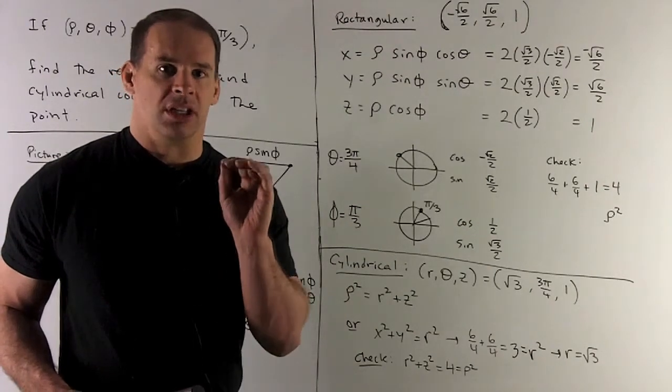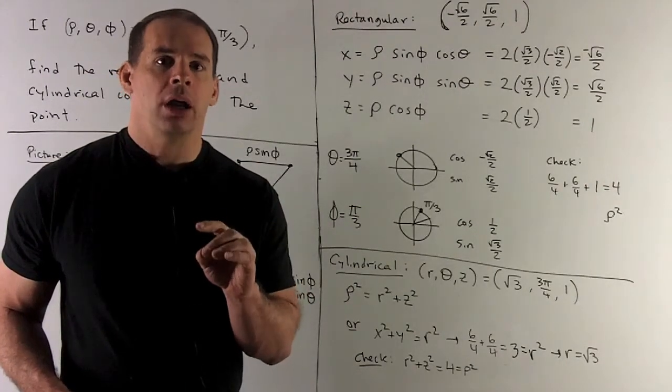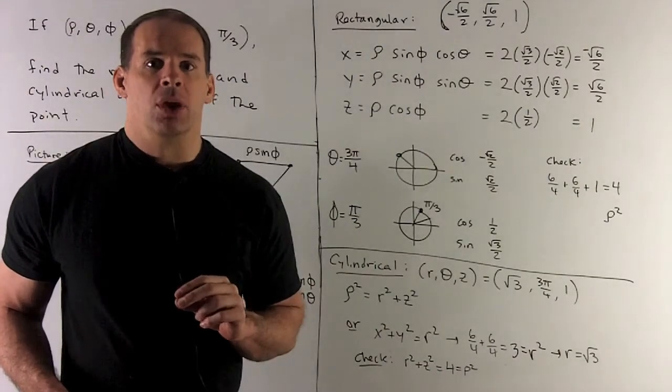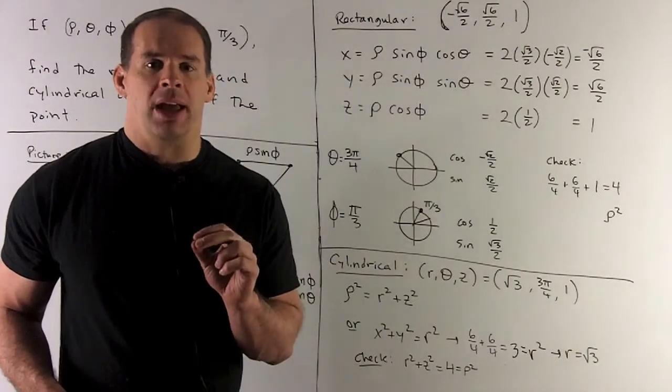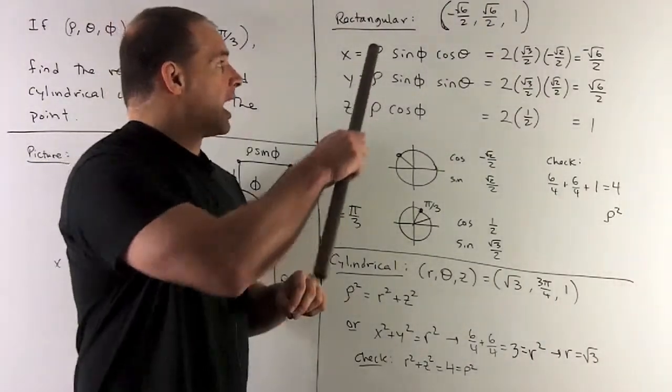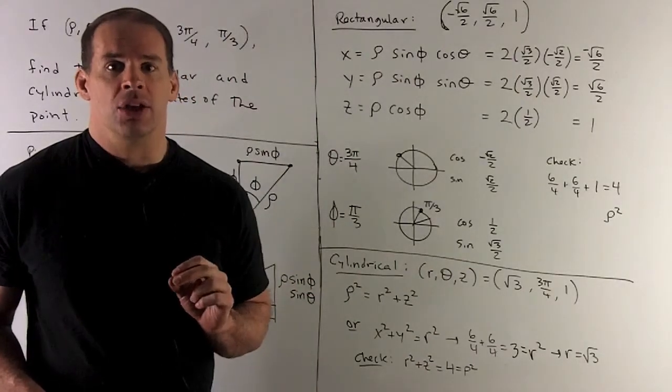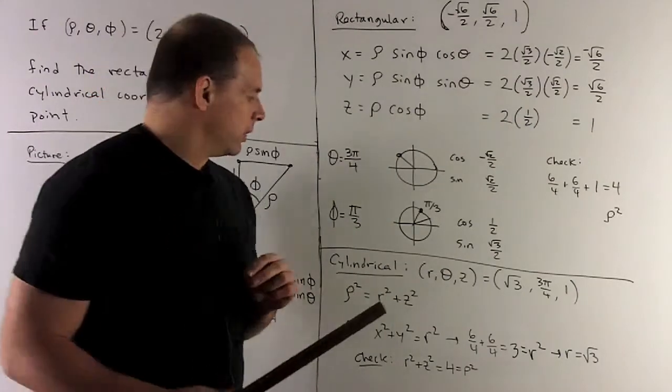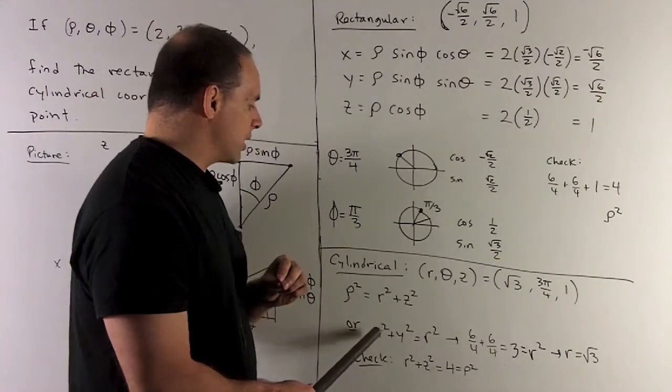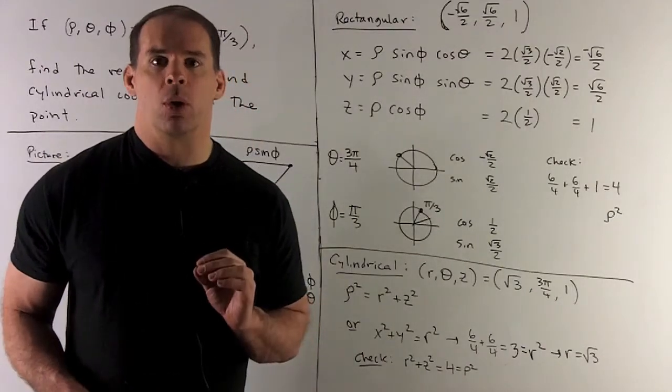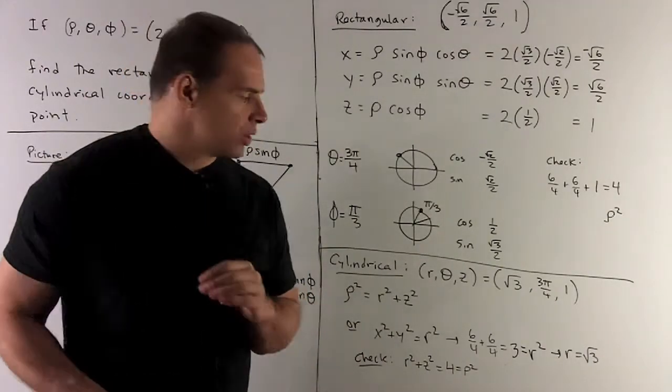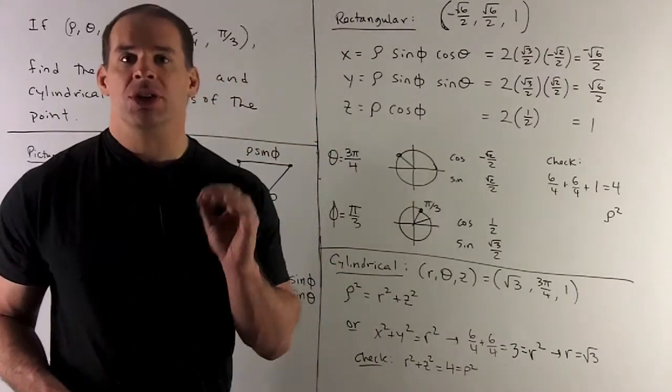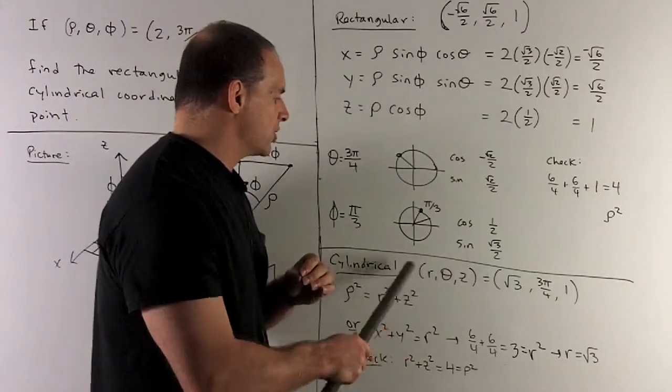Now, going to cylindrical, we're looking for r, theta, and z. We're two thirds of the way there. We're given theta is three pi fourths, and from the rectangular part, we have that z equals one. So I just need to find r. You have two ways you can go. r squared is equal to x squared plus y squared. This is just coming from polar coordinates. So in this case, we see that r squared equals three, so r equals square root of three.